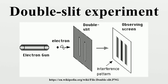The width of the bands is a property of the frequency of the illuminating light. When Thomas Young first demonstrated this phenomenon, it indicated that light consists of waves, as the distribution of brightness can be explained by the alternately additive and subtractive interference of wave fronts. Young's experiment, performed in the early 1800s, played a vital part in the acceptance of the wave theory of light, vanquishing the corpuscular theory of light proposed by Isaac Newton, which had been the accepted model of light propagation in the 17th and 18th centuries.